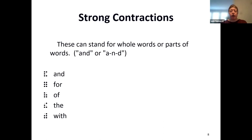The next group is called strong contractions. These can stand for whole words, like we just looked at, or even parts of words. These strong contractions are very important because they show up everywhere. You probably do want to memorize these because they appear in common words even for a young child. They can stand for words like 'and,' or they could be the letters A-N-D as part of a larger word. Let's look at how they can be used.